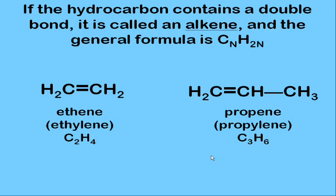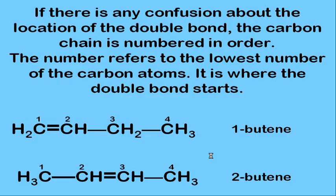With four carbons, the name would be butene — not butane. Here we have an issue with where the double bond is located. The double bond can be on the end or in the middle. The carbon chain is numbered in order, and the number refers to the lowest-numbered carbon. When the double bond is on the end, we call it 1-butene; when it's in the middle, 2-butene.